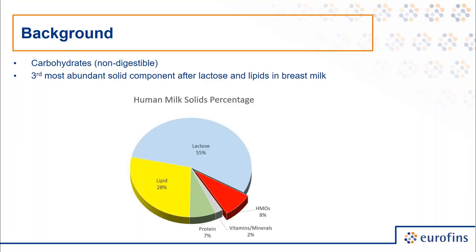A little bit of background starting out first. HMOs are a non-digestible carbohydrate. What most people don't know is they are the third most abundant solid component after lactose and lipids in breast milk. They comprise roughly about 8% of the solids.